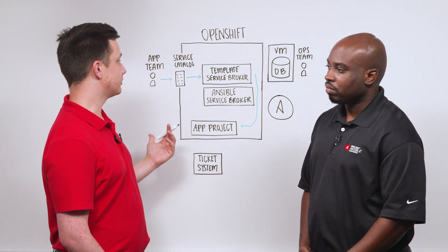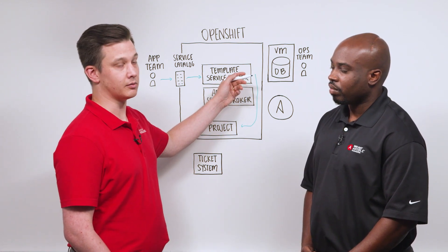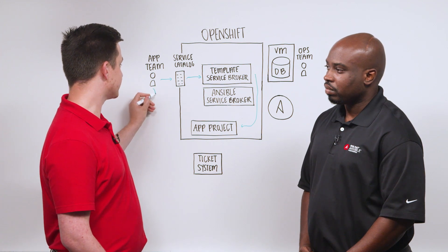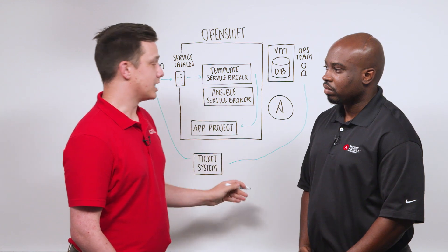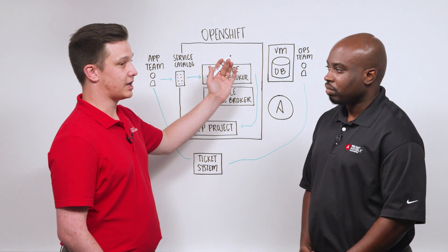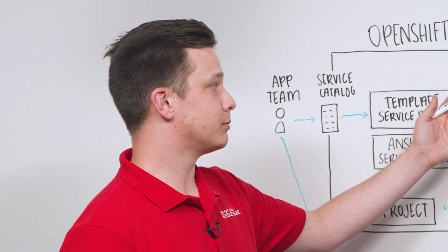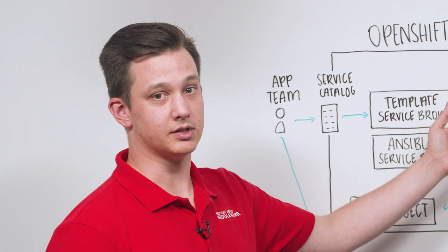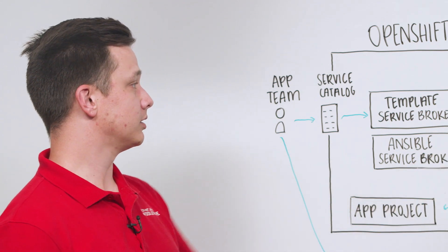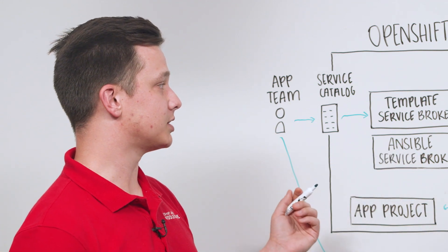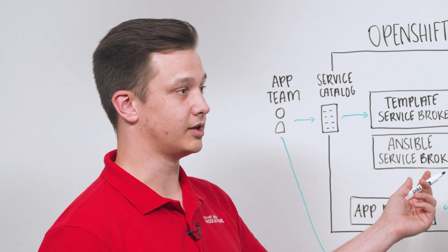What the service catalog doesn't do is allow teams to provision things off of the cluster. So generally, teams will need to submit a ticket that gets picked up by the ops team, and the ops team will provision any of those resources. For example, if an application needs to talk to a database, the ops team will provision the database and then pass credentials and connection information back to the app team. This long process can lead to a lot of miscommunication and downtime on both the application side and the operations team when fulfilling those tickets.